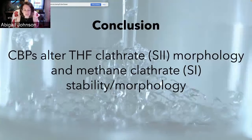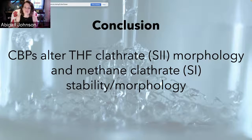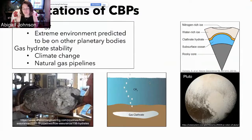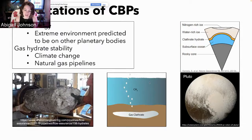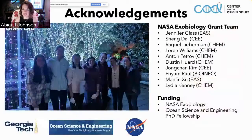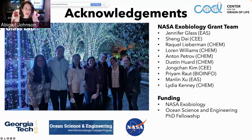In conclusion, our clathrate-binding proteins alter THF clathrate morphology (a Structure 2 clathrate) as well as methane clathrate stability and morphology (a Structure 1 clathrate). The implications are that these proteins come from extreme environments predicted to exist on other planetary bodies, so we could use them to search for life elsewhere. There are also implications for gas hydrate stability and climate change, since gas clathrates store gigatons of carbon as the greenhouse gas methane, as well as potential applications for natural gas pipelines. I'd like to acknowledge the NASA Exobiology grant team, the Ocean Science and Engineering PhD fellowship, and the Glass Lab.